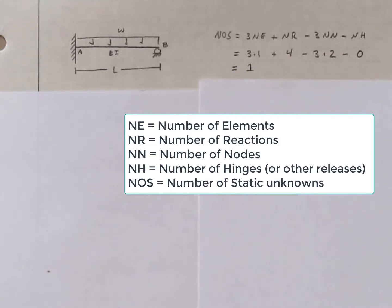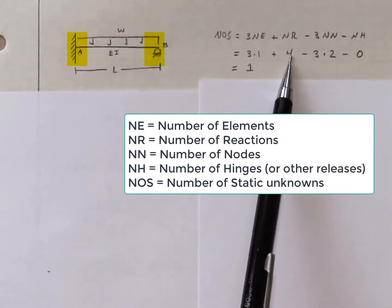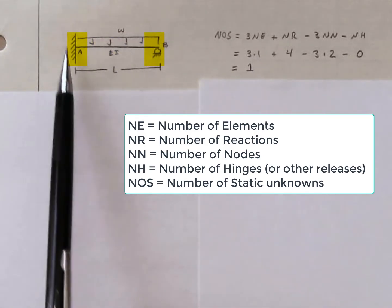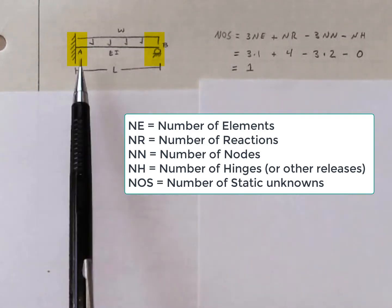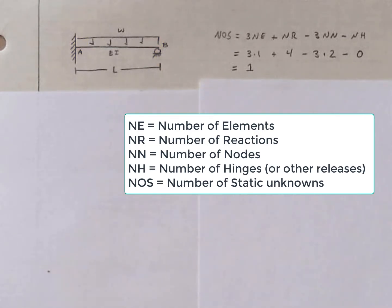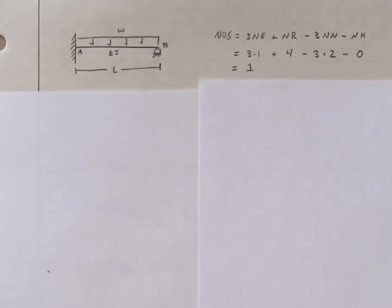We have three times one element plus four reactions, that's three at the fixed end, one at the roller, two nodes, one at A, one at B, and no hinges or other releases. This gives us a degree of indeterminacy of one.